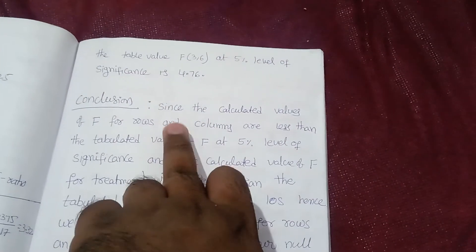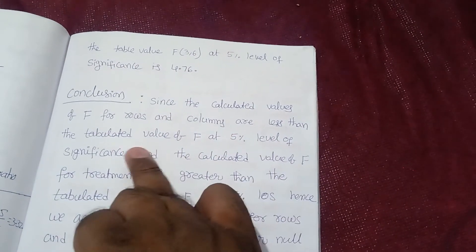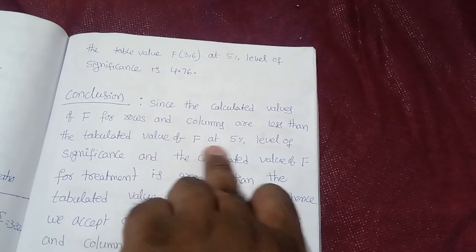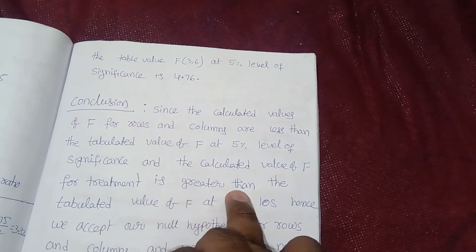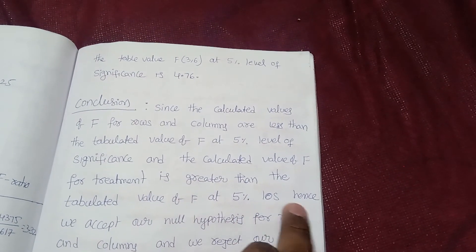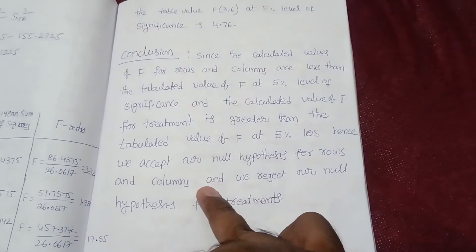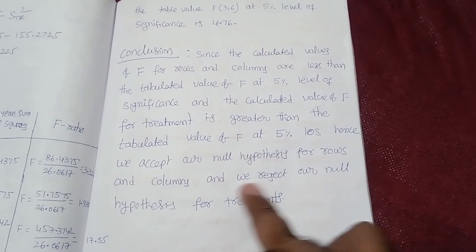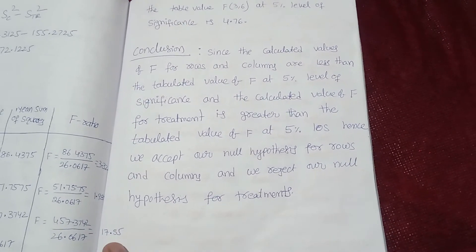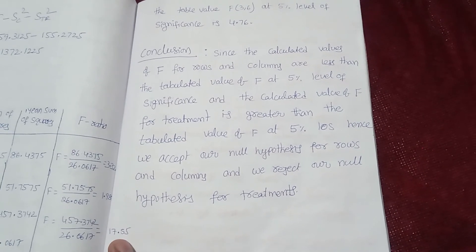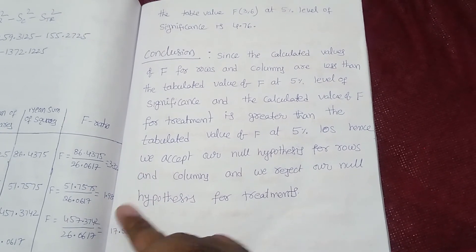Conclusion: Since the calculated values of F for rows and columns are less than the table value of F at 5% level of significance, we accept the null hypothesis for rows and columns. Since the calculated value of F for treatments is greater than the table value (17.55 > 4.76), we reject the null hypothesis for treatments.